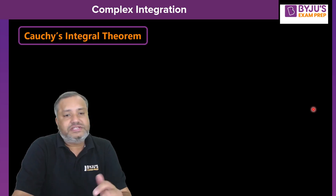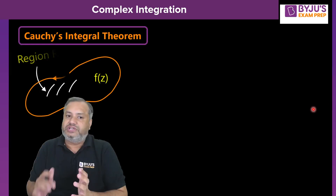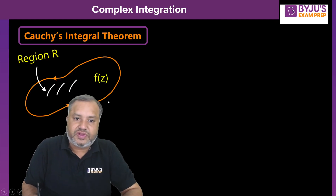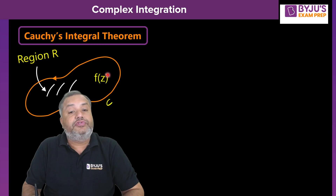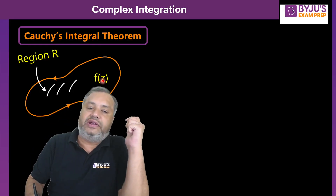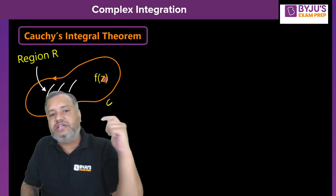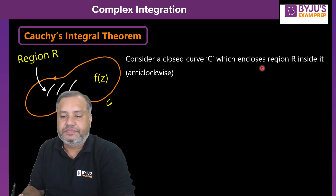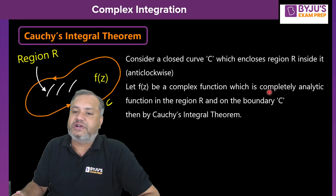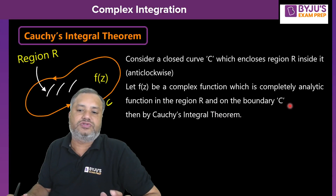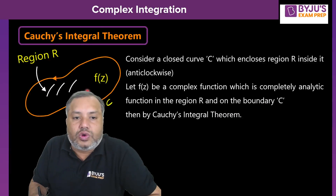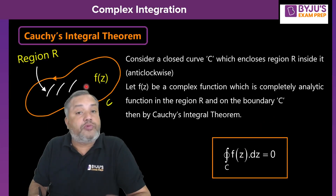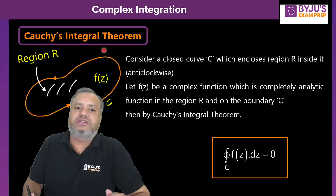Cauchy's integral theorem — what is it? You have a closed region C, and the region bounded inside C is R. In this closed region, we have defined a complex function f(z) which is completely analytic, meaning there does not exist any singular point in this region or on the boundary. In that case, the closed loop integral of f(z) will be 0. If there exist no singular points in this region, then this integration will be 0. This is Cauchy's integral theorem.